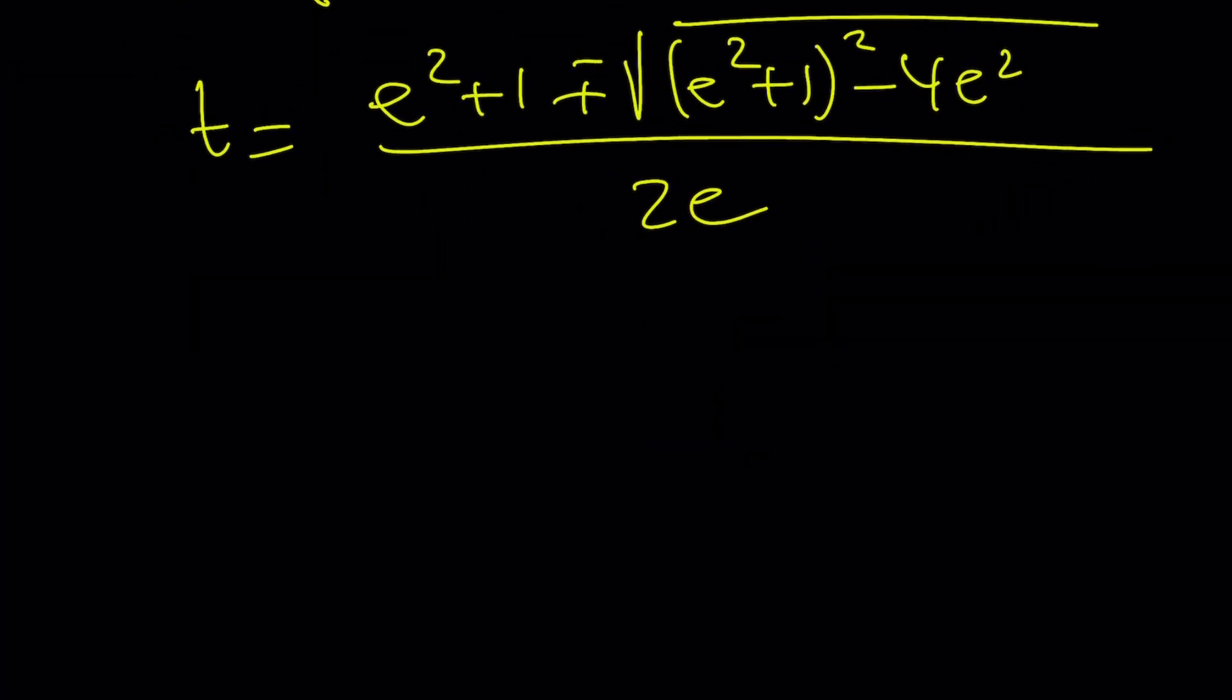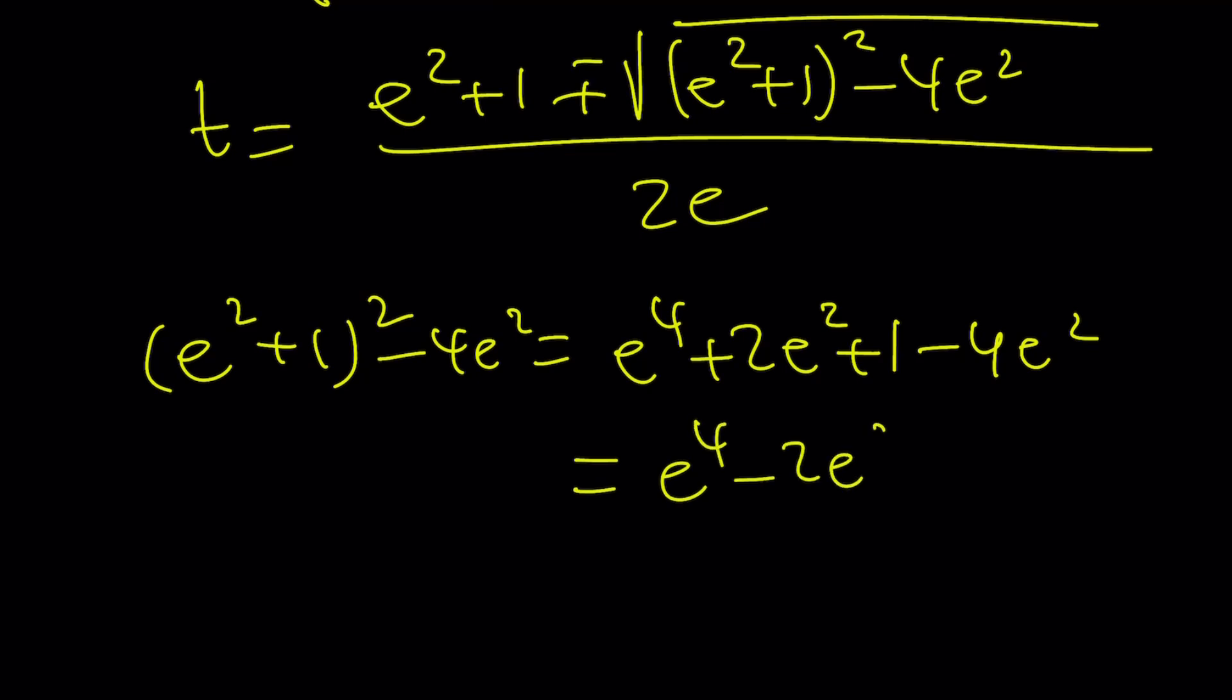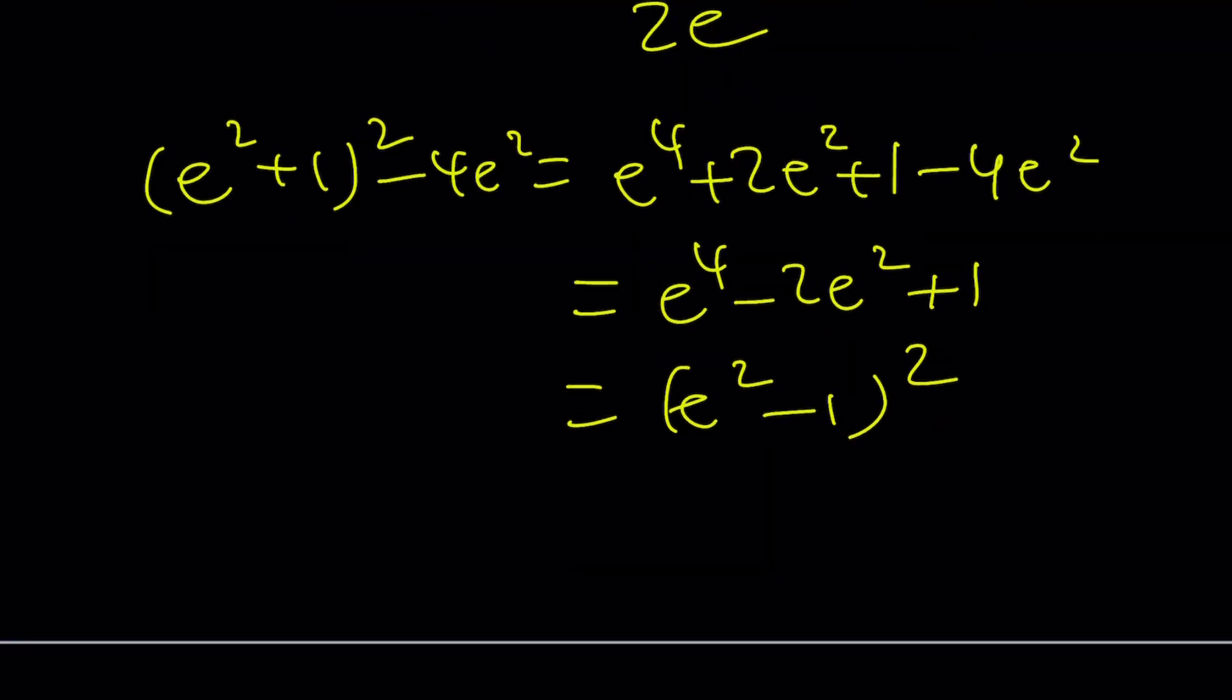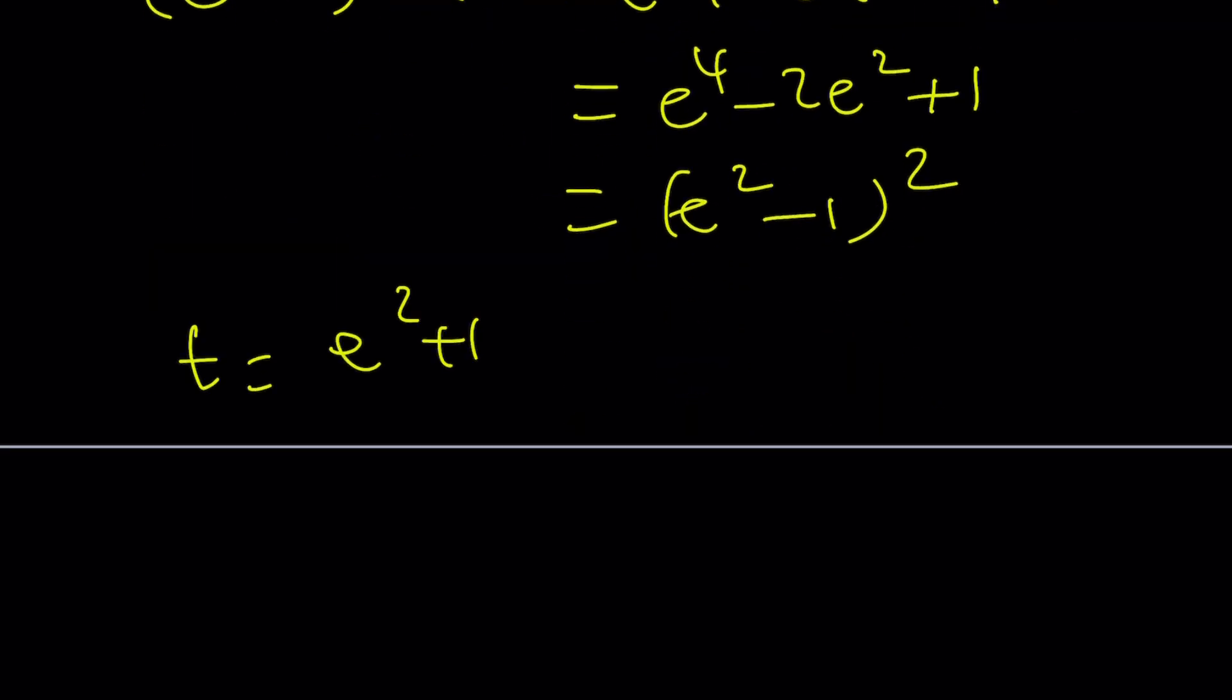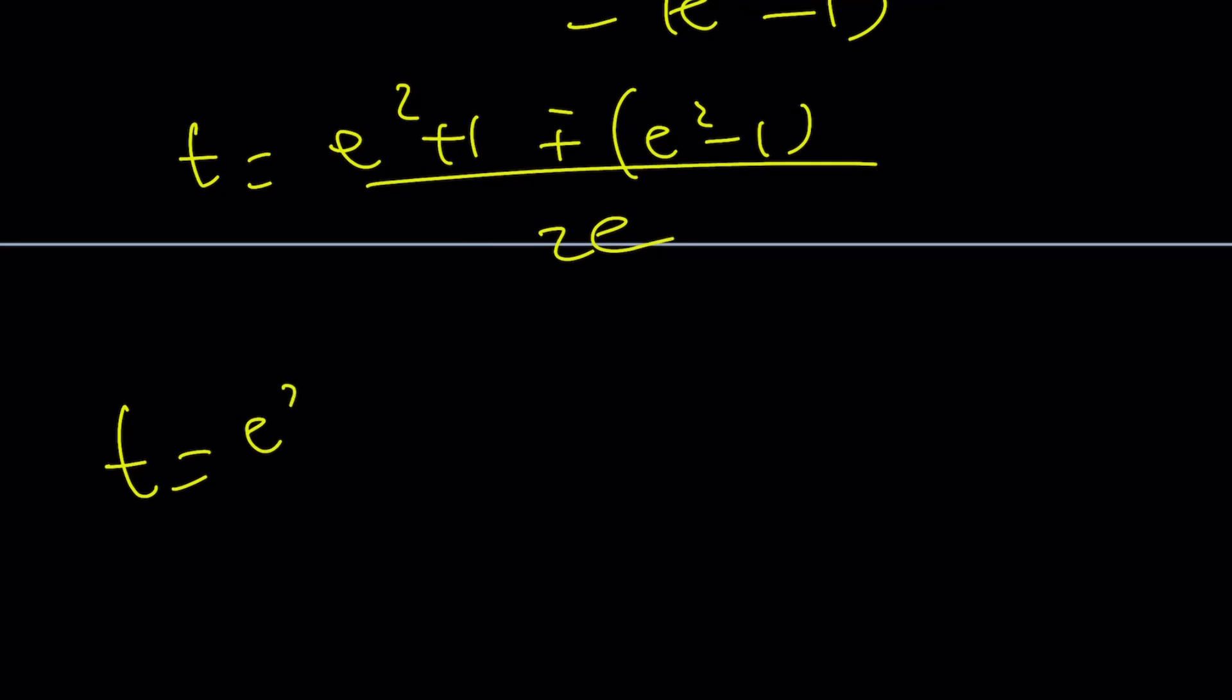Let's see what that looks like. Now, inside the parentheses, I have an expression. Let's simplify that first. E squared plus 1 squared minus 4E squared. It can be written as E to the 4th plus 2E squared plus 1 minus 4E squared. And that is E to the 4 minus 2E squared plus 1. And that is E squared minus 1 quantity squared. So, that's my discriminant. So, T is going to be E squared plus 1 plus minus this divided by 2E. Let's separate these. T equals E squared plus 1 plus E squared minus 1 divided by 2E. 1 cancels out, 2E squared divided by 2E gives us E as one of the solutions.